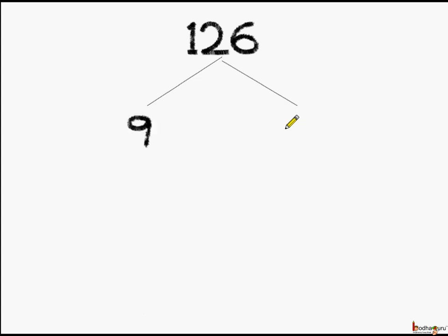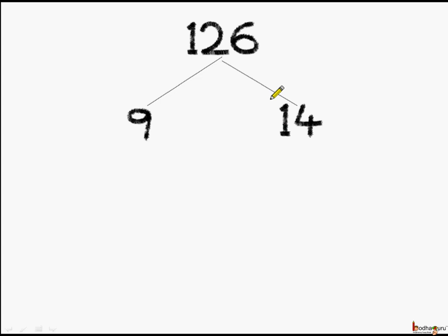So, we write here 9 and here we write 14. See what we did? We wrote the number for which we are doing the prime factorization. Then we make the two branches and write the two factors which make 126.